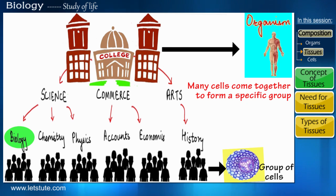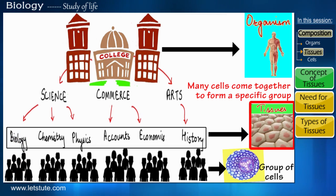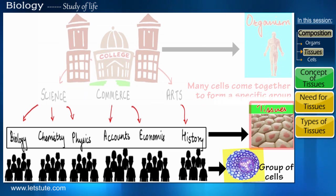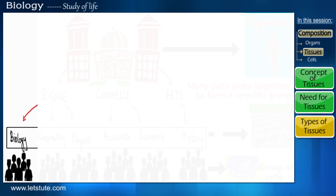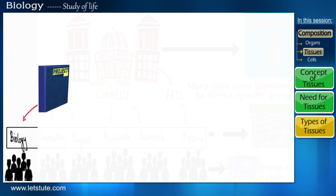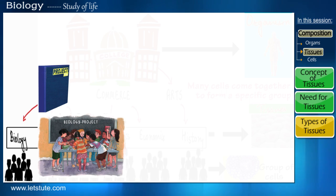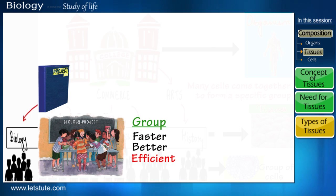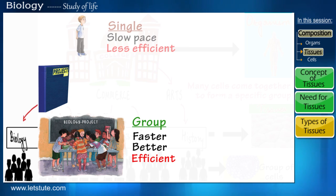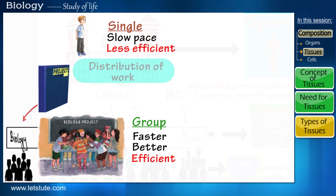Why do they do this? Imagine the class of biology students is given a project to be completed. A group of students will be able to complete the project much faster and better than a single student. This group of students will be able to do so by dividing the project work amongst themselves to finish it faster.